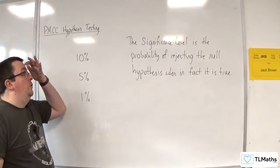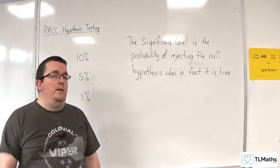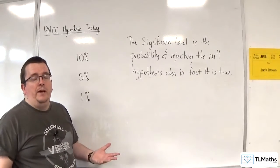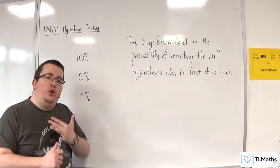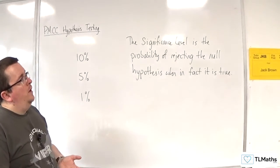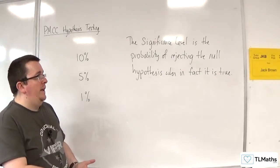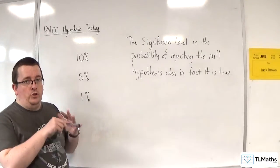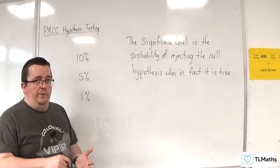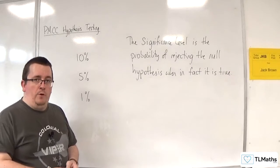In what we're talking about with PMCC hypothesis testing, we are testing a null hypothesis which says that there is no correlation in the parent population. So, if there is a 10% significance level, what that's saying is that there is a 10% chance that we reject that null hypothesis when, in fact, there is no correlation in the parent population.